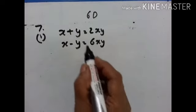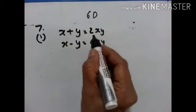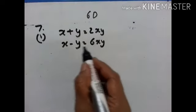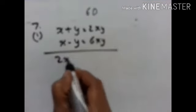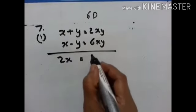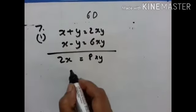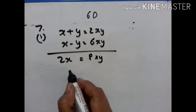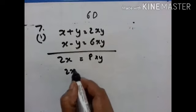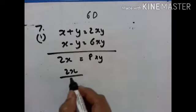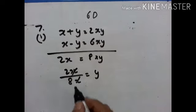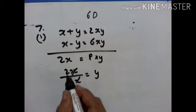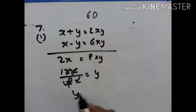7th problem, first part: x plus y is equal to 2xy and x minus y is equal to 6xy. Let us add them: 2x is equal to 8xy, therefore 2x upon 8x is equal to y. Cancelling x, we get y is equal to 1 upon 4.